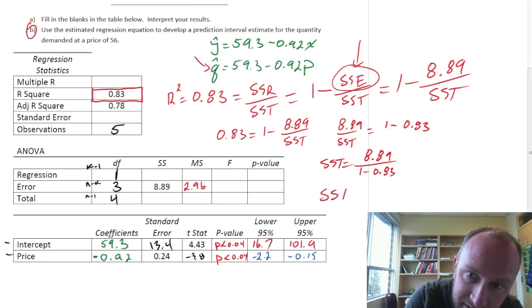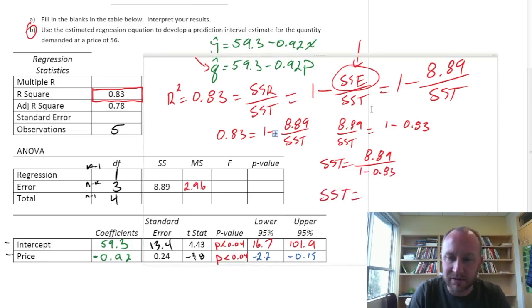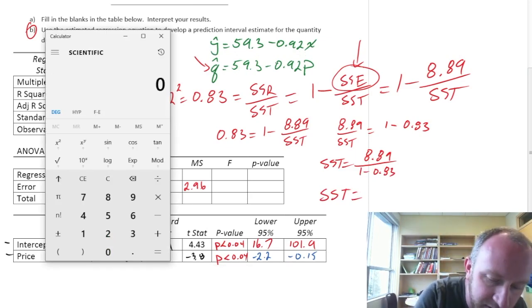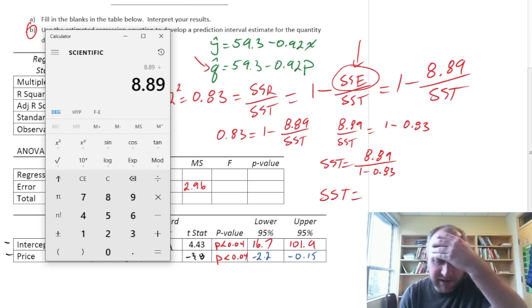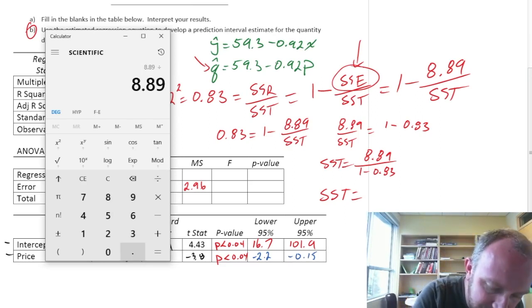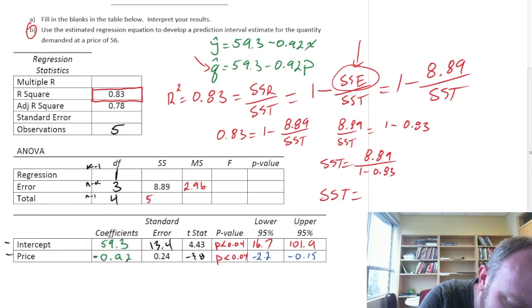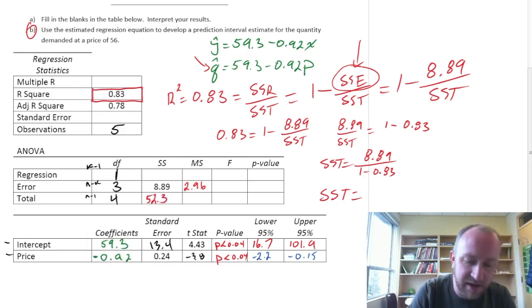Okay, so SST is going to be equal to 8.89 divided by 1 minus 0.83. So SST is finally equal to, let's get our calculator out here, and so 8.89 divided by, that's going to be 0.17. So SST I have is 52.3. 52.3. There.